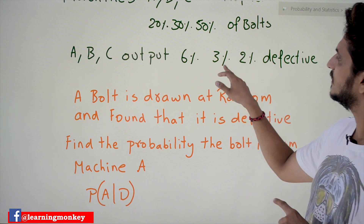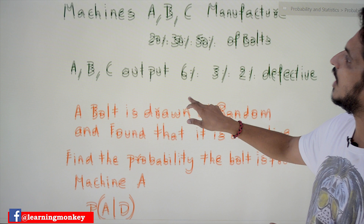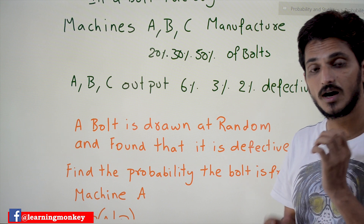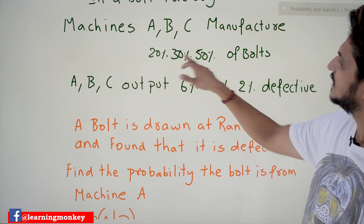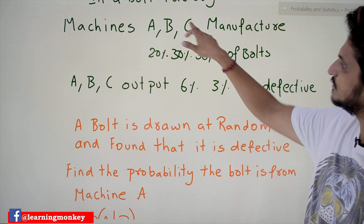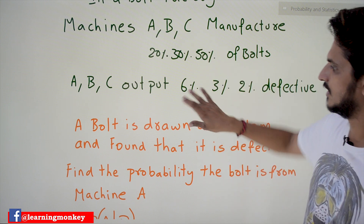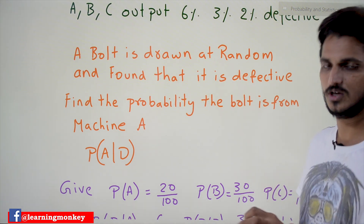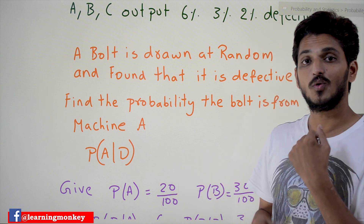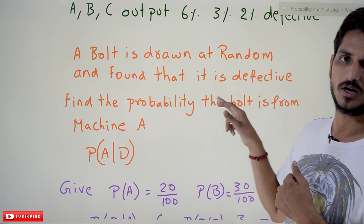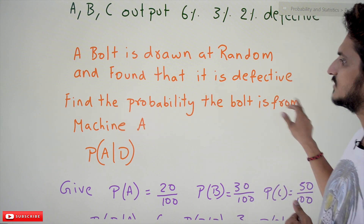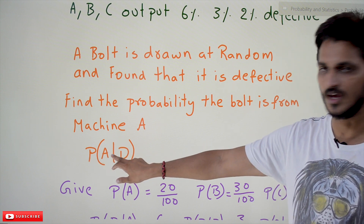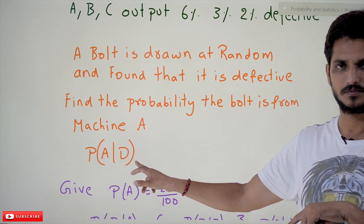A, B, and C output 6%, 3%, and 2% defective bolts respectively. That means from machine A, 6% of the bolts are defective; from B, 3% are defective; from C, 2% are defective. A bolt is drawn at random from the market and found to be defective. Find the probability that the bolt is from machine A.